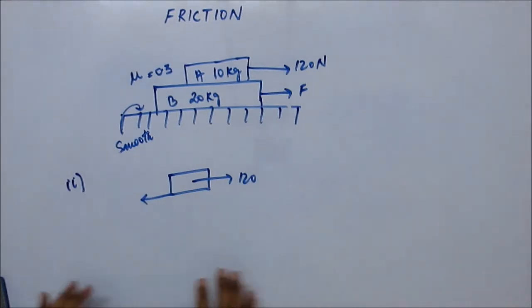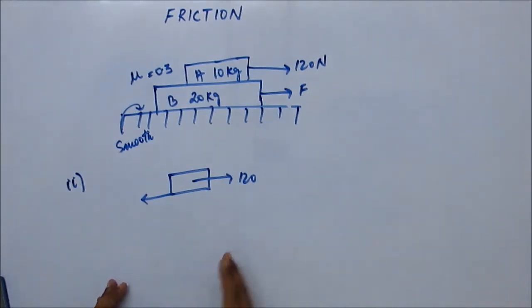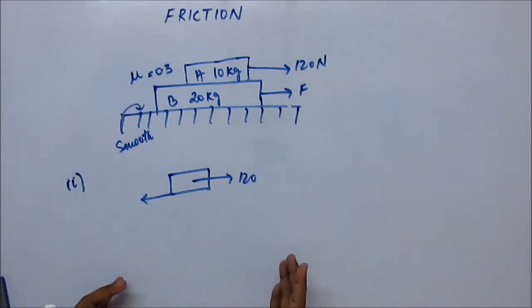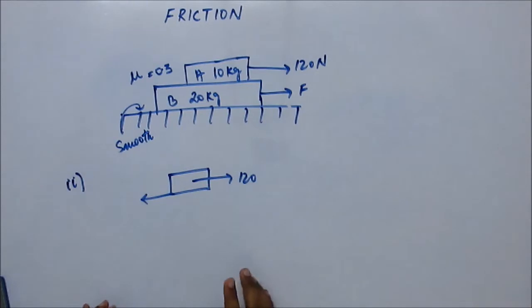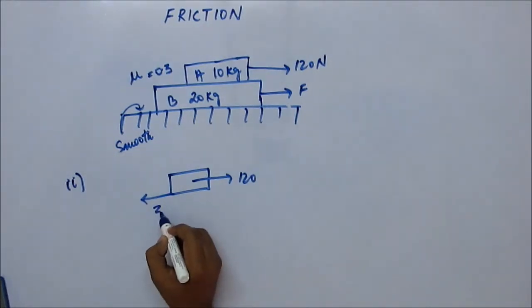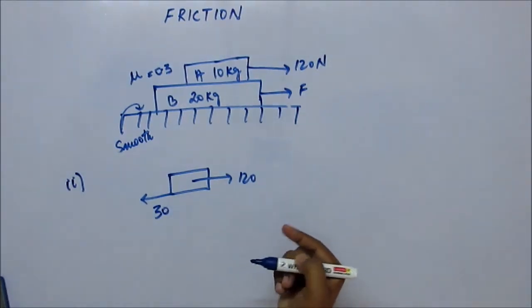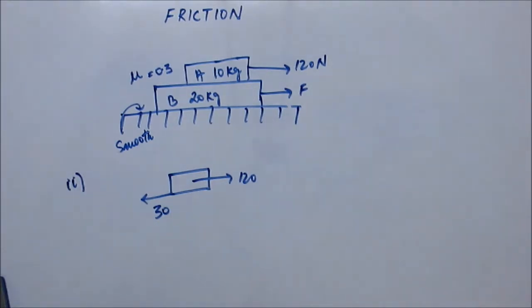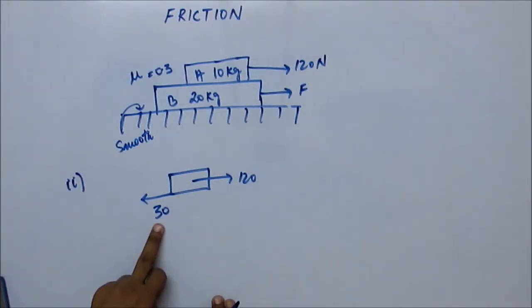At that very moment the friction force will continue to be the maximum force — limiting friction — meaning there will be kinetic friction; they will be at the verge of slipping. If you're talking about the minimum force, at that point it is slipping and just about to stop, so the friction force will be limiting friction force, equal to 30 Newton.